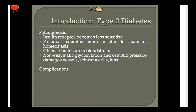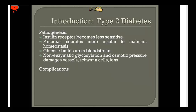To recap: the insulin receptor becomes less sensitive, the pancreas secretes more insulin to maintain glycemic control, but glucose eventually builds up in the bloodstream. The key clinical concept here — important for boards — is non-enzymatic glycosylation. That excess glucose is kind of sticky and attaches to other structures in the body. It sticks to blood vessels, causing blood vessel damage, and it also causes dysregulation of water balance, acting as an osmotic factor that leads to further damage.